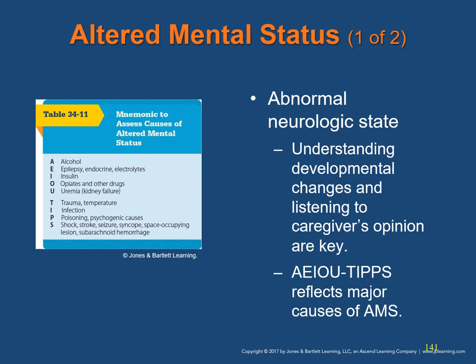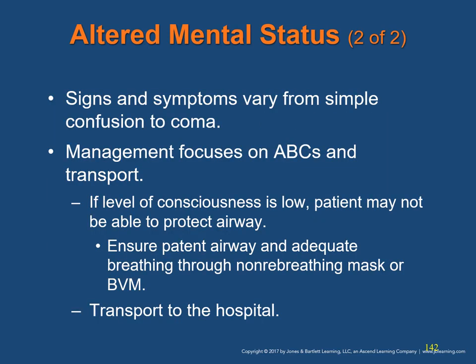Neurologic Emergencies — Altered Mental Status (AMS). AMS is an abnormal neurologic state in which the pediatric patient is less alert and interactive than is age-appropriate. Understanding normal developmental and age-related changes in behavior and listening carefully to the caregiver's opinion are key. A child not behaving in a developmentally appropriate manner could indicate AMS. The mnemonic AEIOU-TIPPS reflects the major causes of AMS. Signs and symptoms range from simple confusion to coma. Management focuses on the ABCs and transport. If the level of consciousness is low, ensure a patent airway and adequate breathing through a non-rebreather mask or BVM.